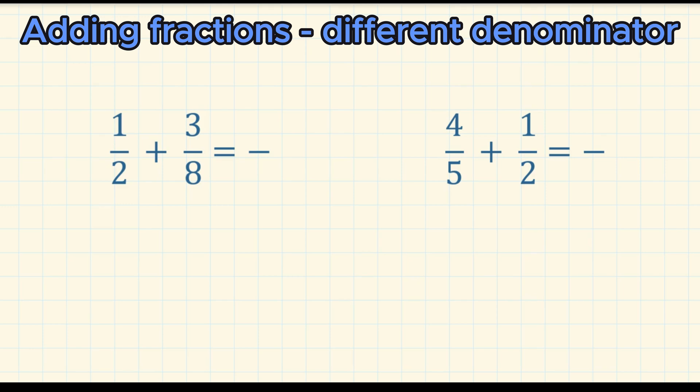Here we'll look at two examples and show you how to do this. If we look at the first example, a half plus three eighths, we see that the denominators are two and eight, so we need to change these fractions into equivalent fractions with the same denominator, and the way we do that is by finding the lowest common multiple of two and eight.